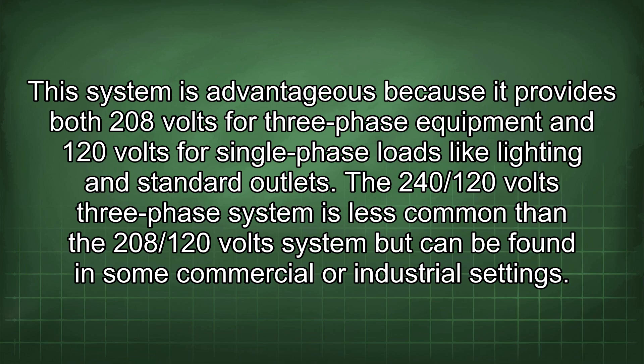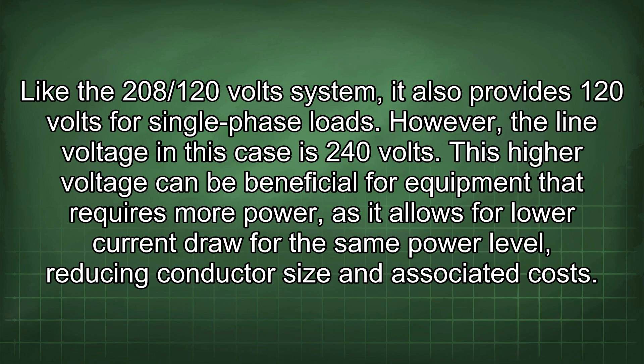The 240/120-volt three-phase system is less common than the 208/120-volt system but can be found in some commercial or industrial settings. Like the 208/120-volt system, it also provides 120 volts for single-phase loads. However, the line voltage in this case is 240 volts. This higher voltage can be beneficial for equipment that requires more power, as it allows for lower current draw for the same power level, reducing conductor size and associated costs.